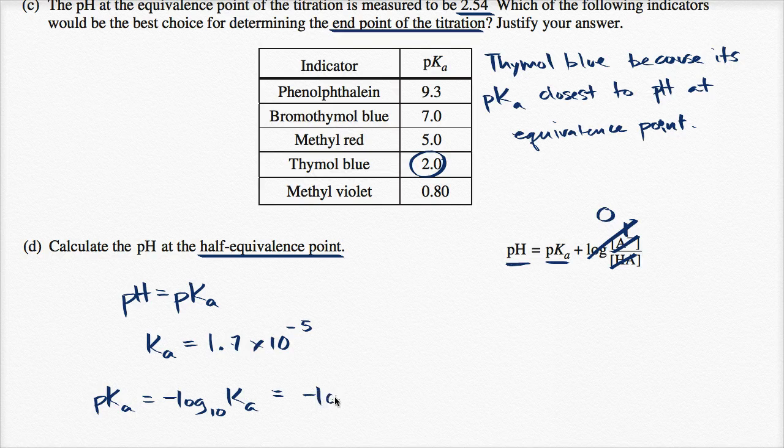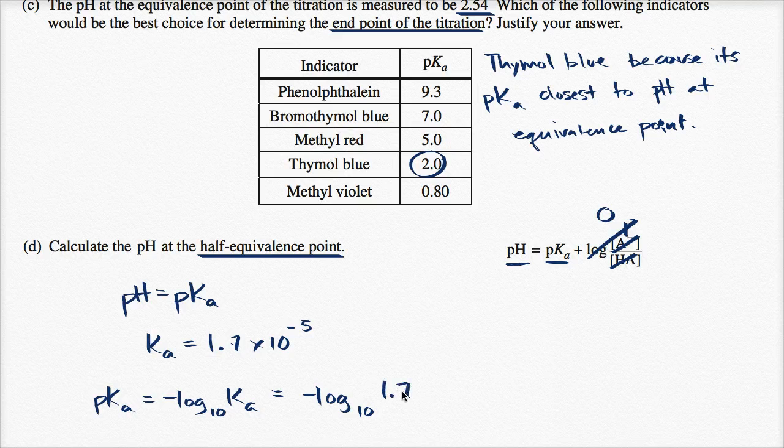This is going to be equal to the negative log base 10 of 1.7 times 10 to the negative fifth power. And what is that going to be?